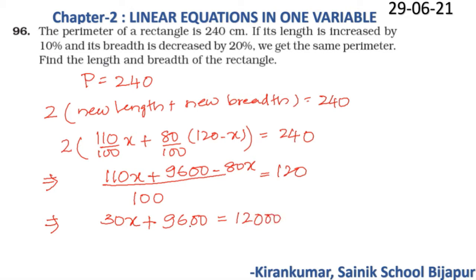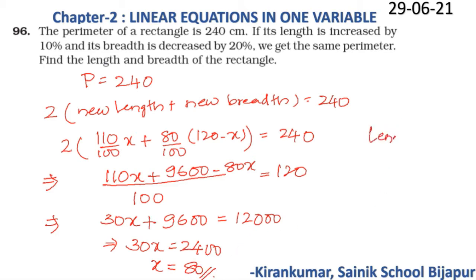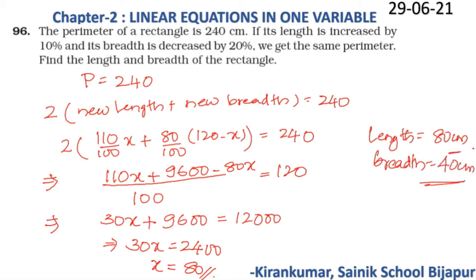From 30x + 9600 = 12000, we get 30x = 2400, so x = 80. Therefore, the length is 80 cm and the breadth is 120 − 80 = 40 cm. These are the dimensions of the rectangle.